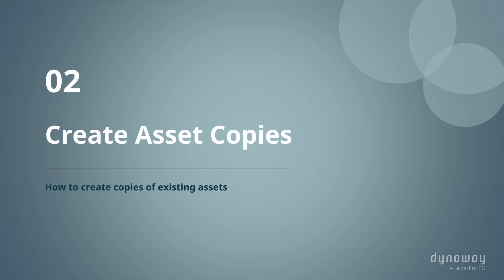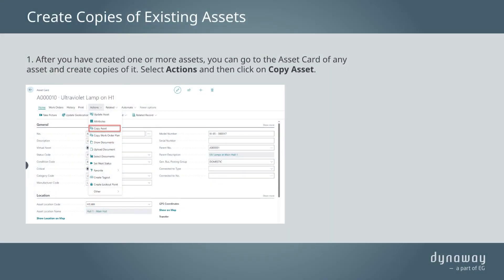How to create copies of existing assets. After you have created one or more assets, you can go to the asset card of any asset and create copies of it. Select Actions and then click on Copy Asset.